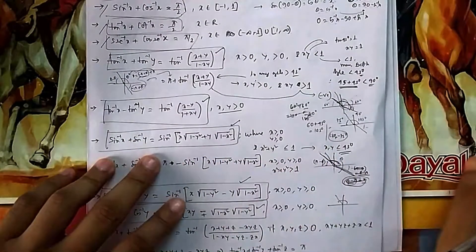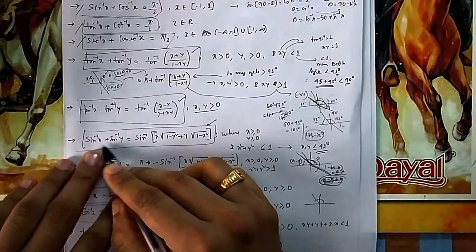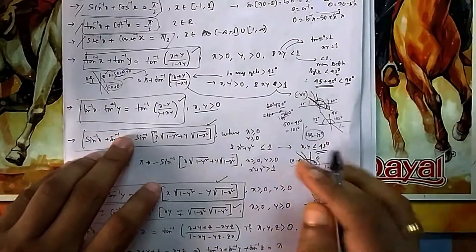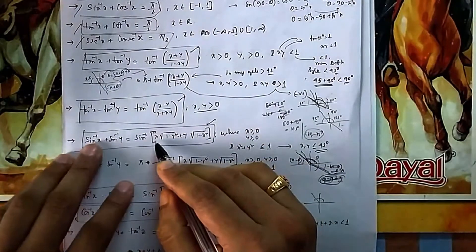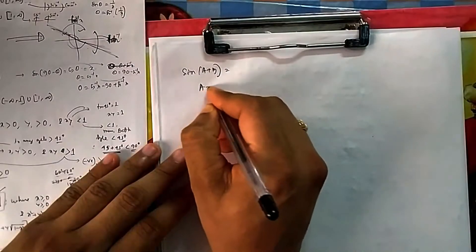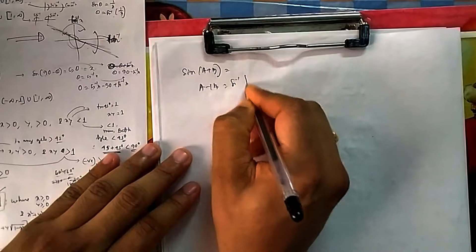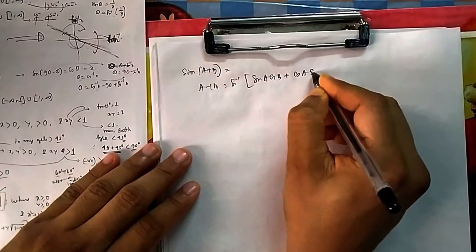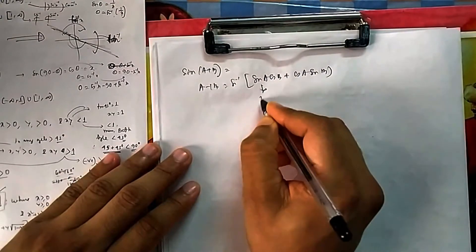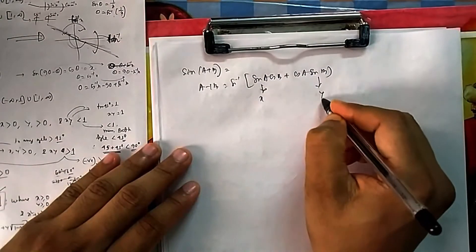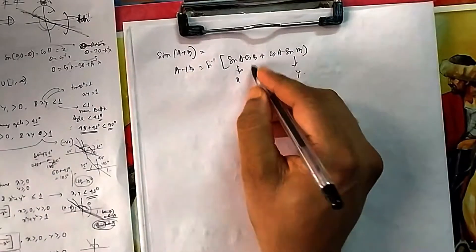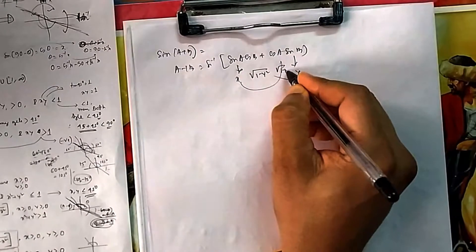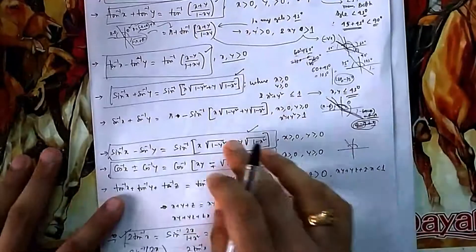Now for sin⁻¹x + sin⁻¹y, recall sin(a+b) = sin a cos b + cos a sin b. Here sin a = x and sin b = y. So cos b = √(1 − y²) and cos a = √(1 − x²). This makes it easy to remember: sin⁻¹x + sin⁻¹y = sin⁻¹(x√(1−y²) + y√(1−x²)).